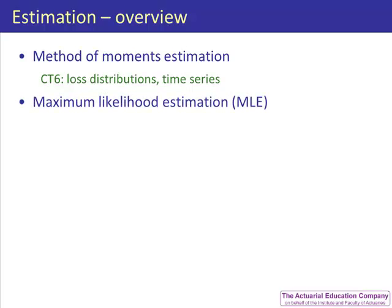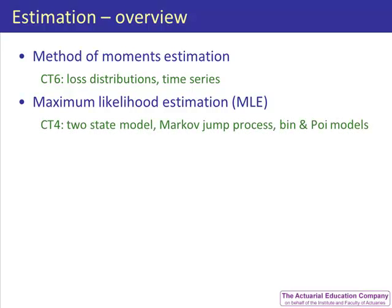The second unit, maximum likelihood estimation, or MLE for short, is where our estimate is the value which maximizes the likelihood of getting our observed sample. We will make use of this throughout subject CT4 to obtain estimates for the transition intensity in the two-state Markov model of mortality, and the transition intensities in other more general Markov jump processes. We also use it to estimate the parameters of a survival function, and to model the probability of death in a binomial model of mortality, and the force of mortality in a Poisson model of mortality.